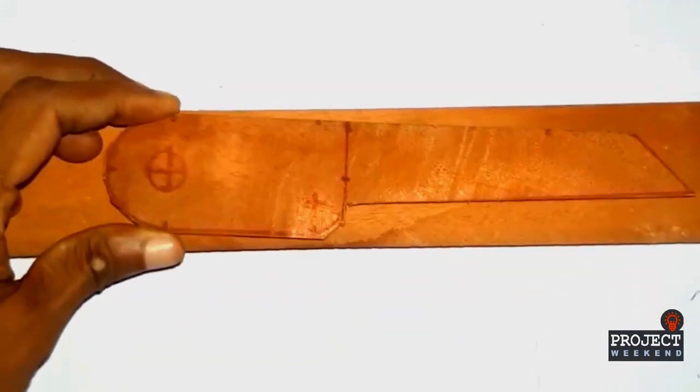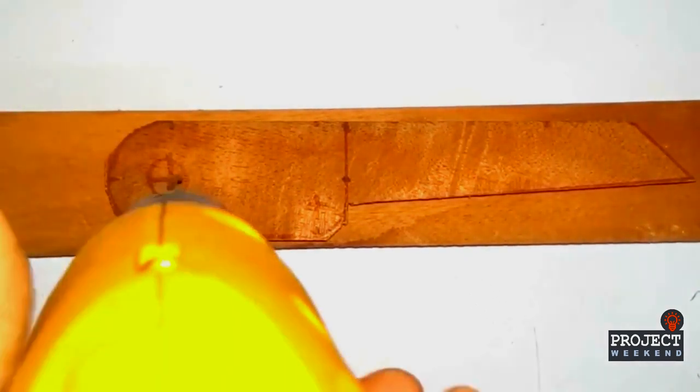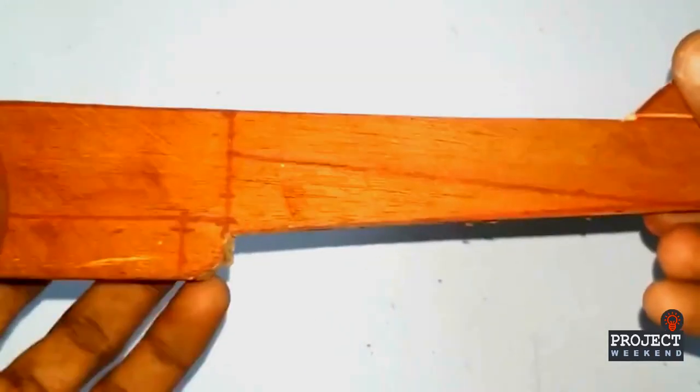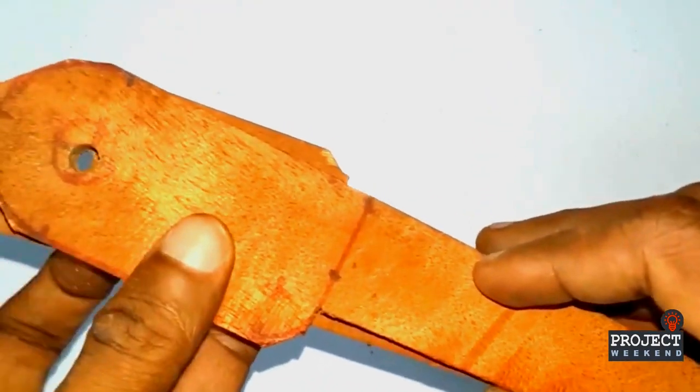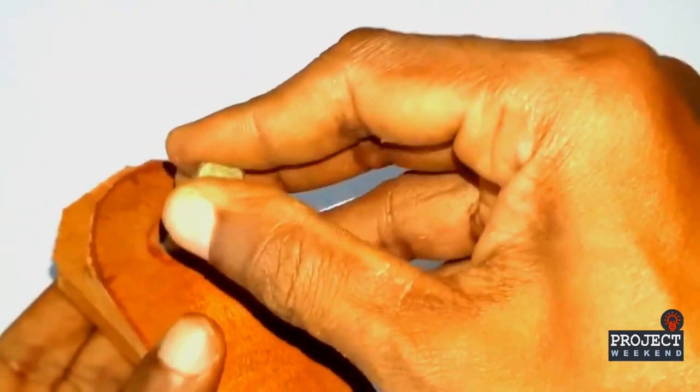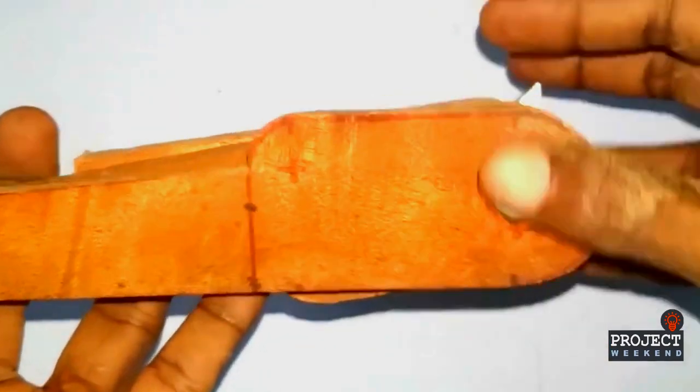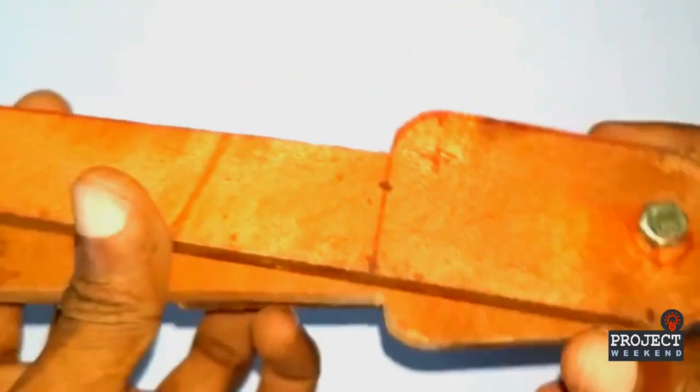Drill holes for mounting. Use a nut and bolt to mount pieces for temporary. Now you can use sandpapers to smoothing the edges of both parts.